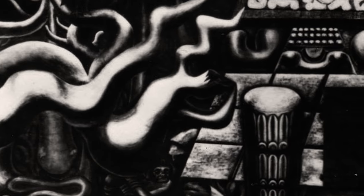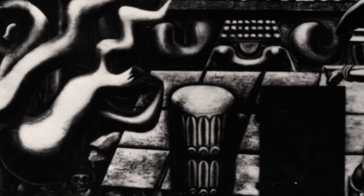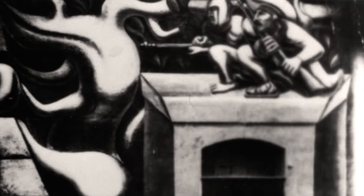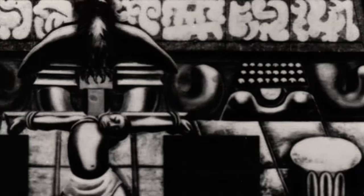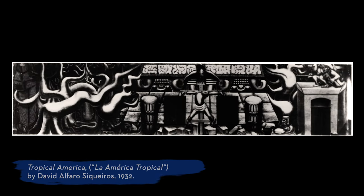In the corners, you see Chacmool and pre-Columbian figures. In the far right-hand corner, you see two snipers, a Mexican and a Peruvian, aiming their guns at the capitalist eagle. It was 18 by 80 feet long, and what you see in that mural is a Mayan pyramid in destruction.